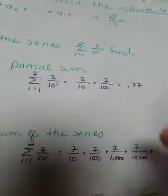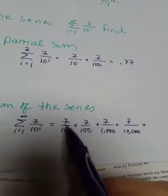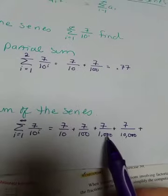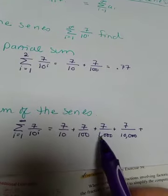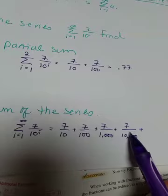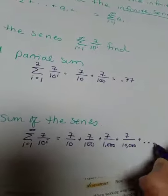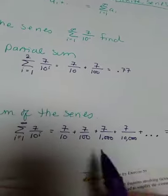The second partial sum, right, was 0.77. So if we had another one plus 7 over 1,000, that would be 0.777, plus another one would be 0.7777—this is just going to keep going on and on and on. So think for a minute.